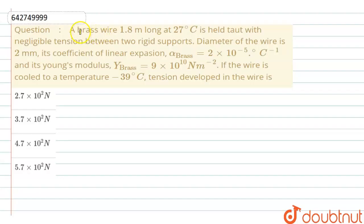Hello dear students, here the question is: a brass wire 1.8 meter long at 27 degree Celsius is held taut with negligible tension between two rigid supports. Diameter of the wire is 2 mm.